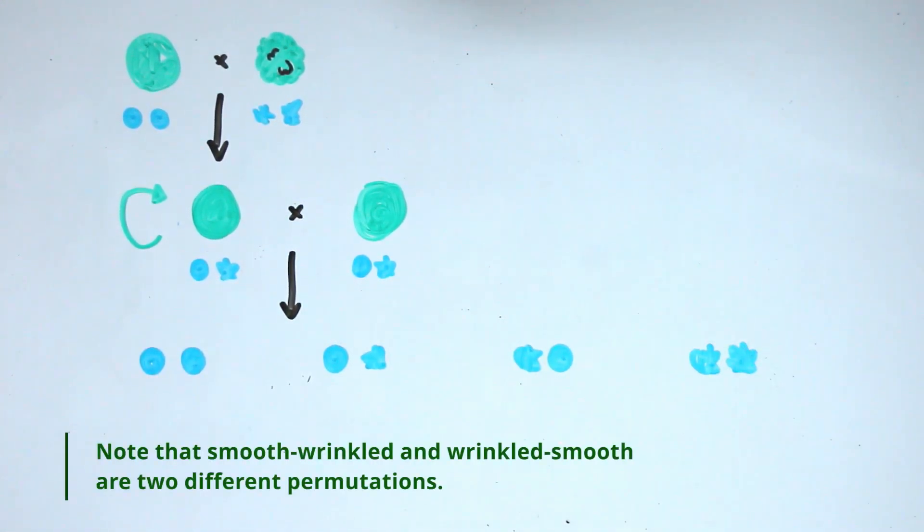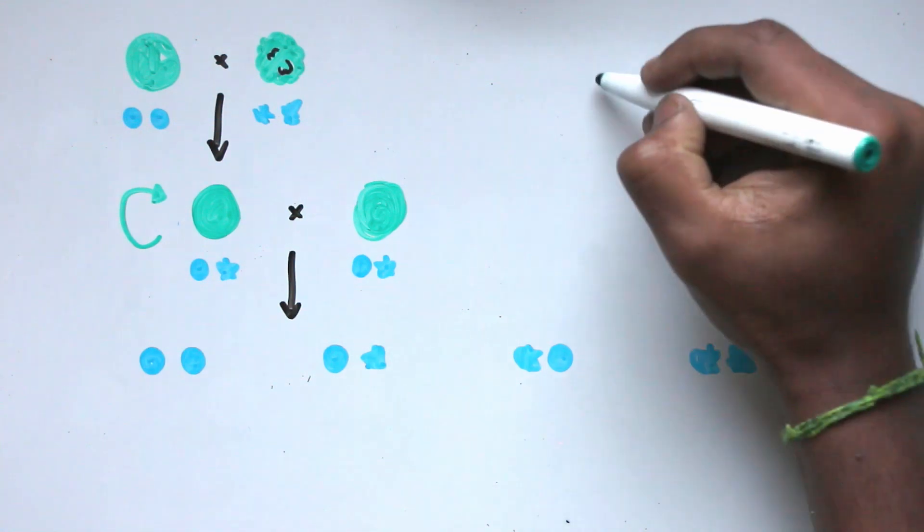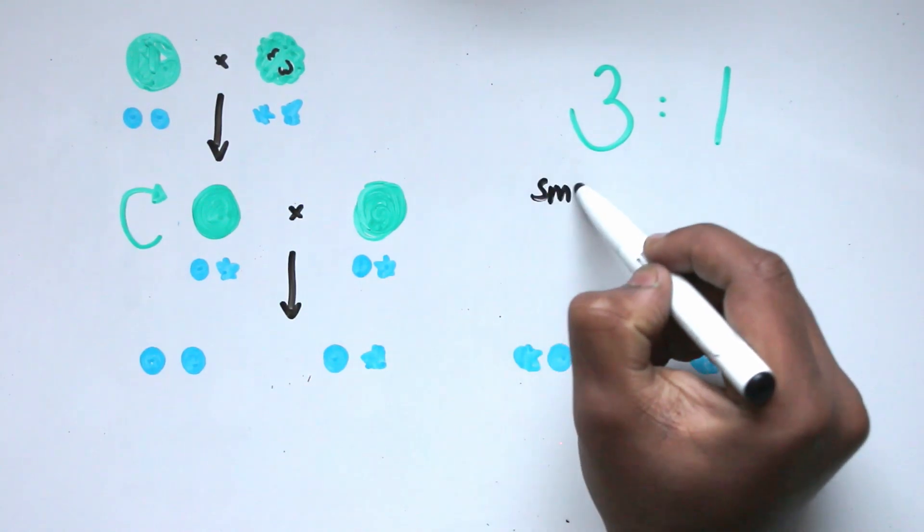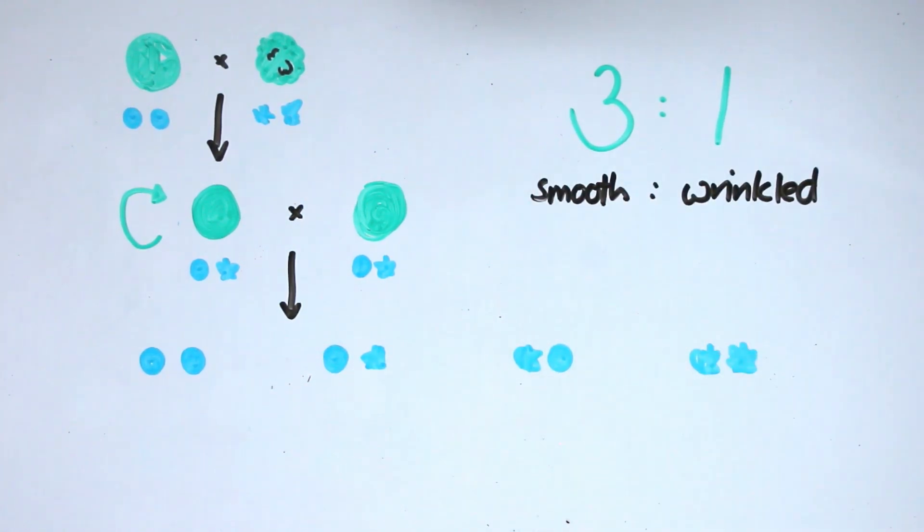The offspring could be smooth-smooth, smooth-wrinkled, wrinkled-smooth, or wrinkled-wrinkled. This explained why Mendel saw three times as many smooth peas as wrinkled peas, since by his theory, there were three different combinations that could give smooth peas, but only one combination that could give wrinkled peas.